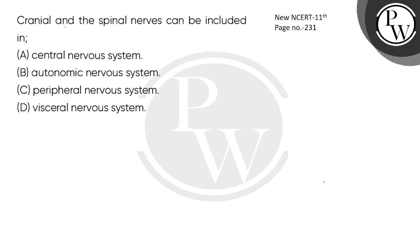Hello children, let's read this question. Cranial and spinal nerves can be included in: Central Nervous System, Autonomic Nervous System, Peripheral Nervous System, and Visceral Nervous System.